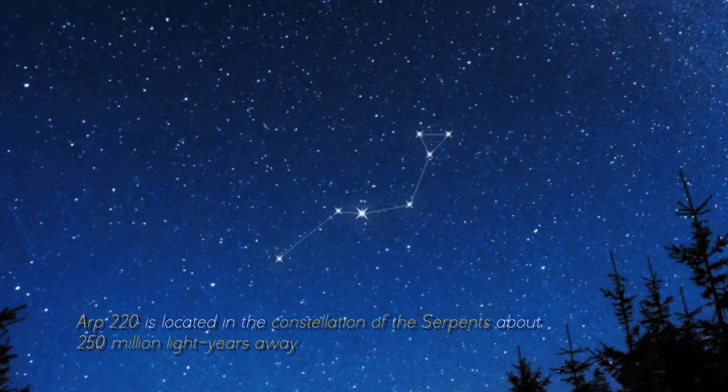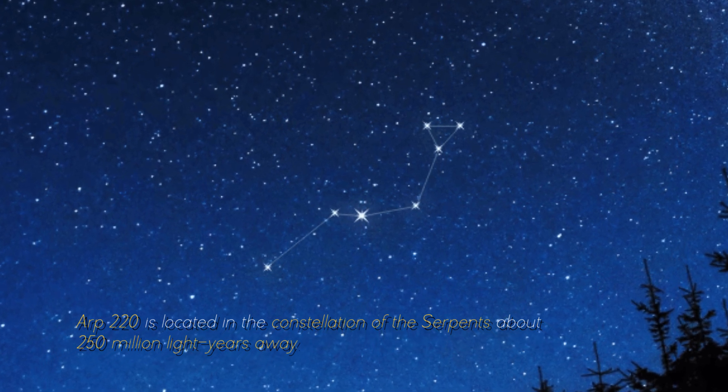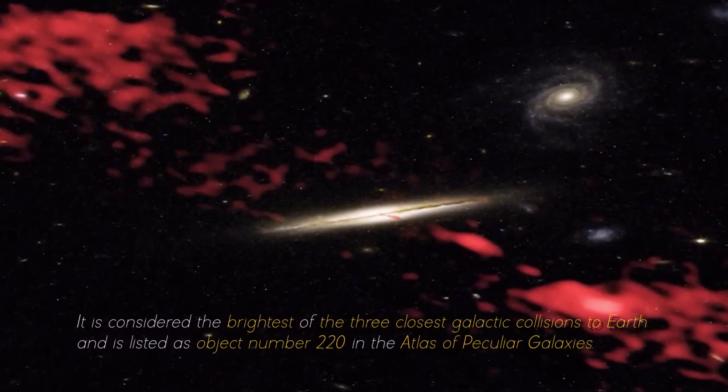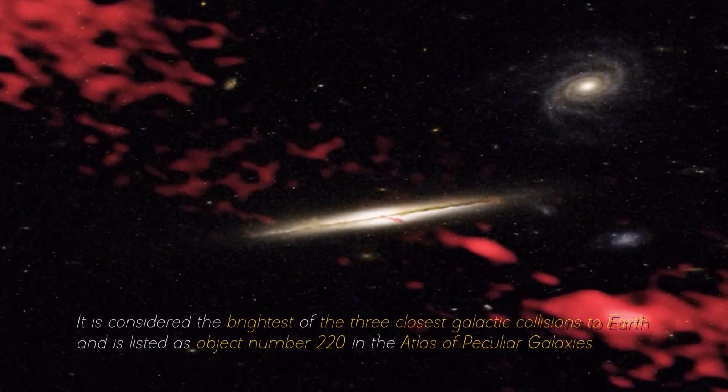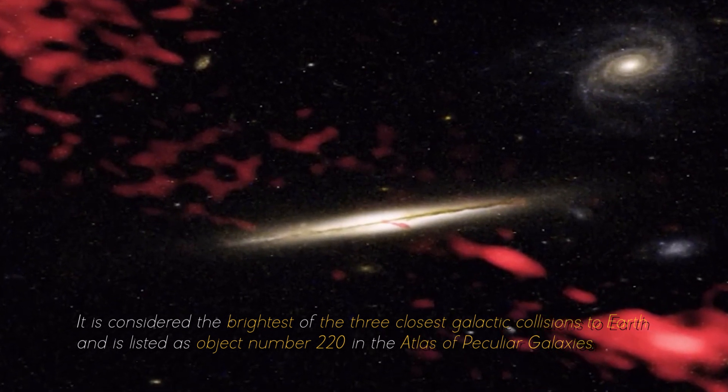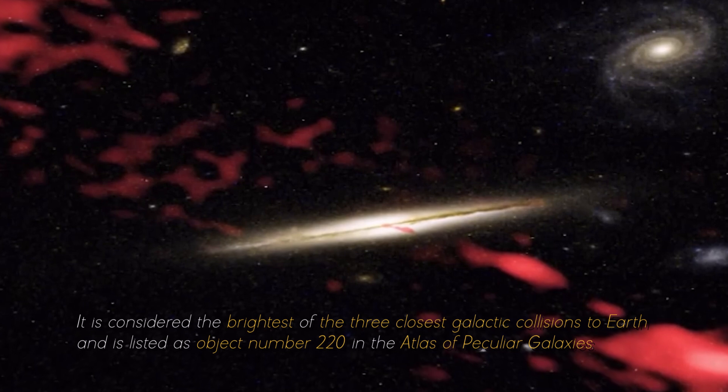ARP 220 is located in the constellation of the Serpents, about 250 million light years away. It is considered the brightest of the three closest galactic collisions to Earth and is listed as object number 220 in the Atlas of Peculiar Galaxies.